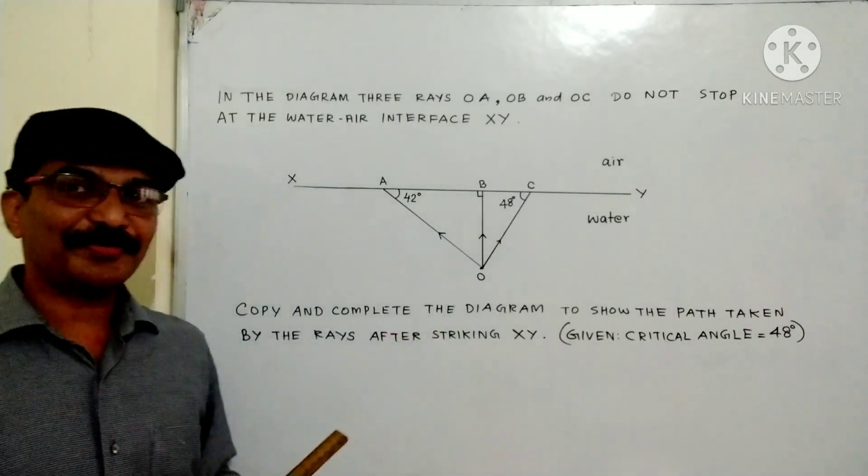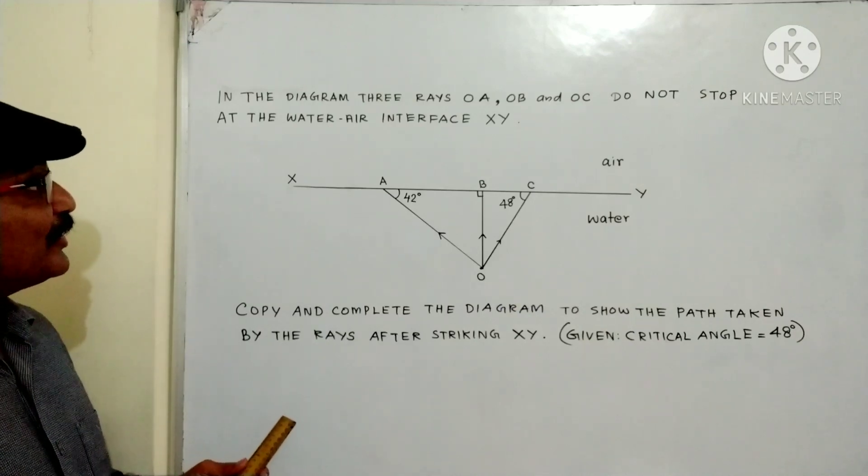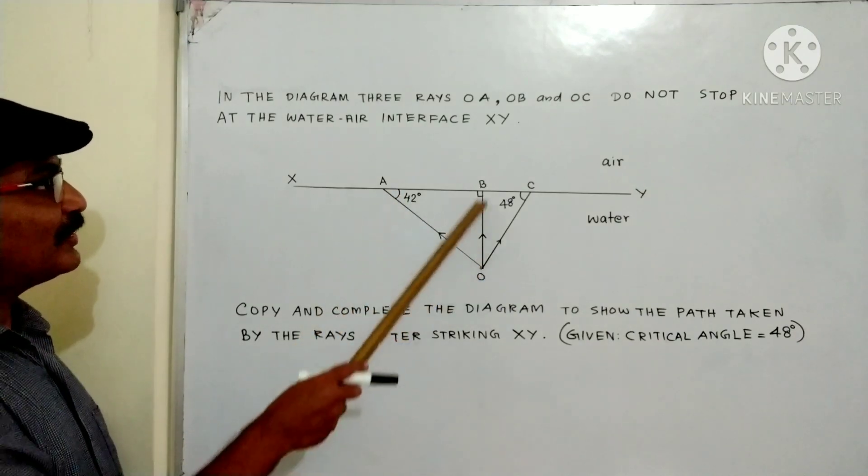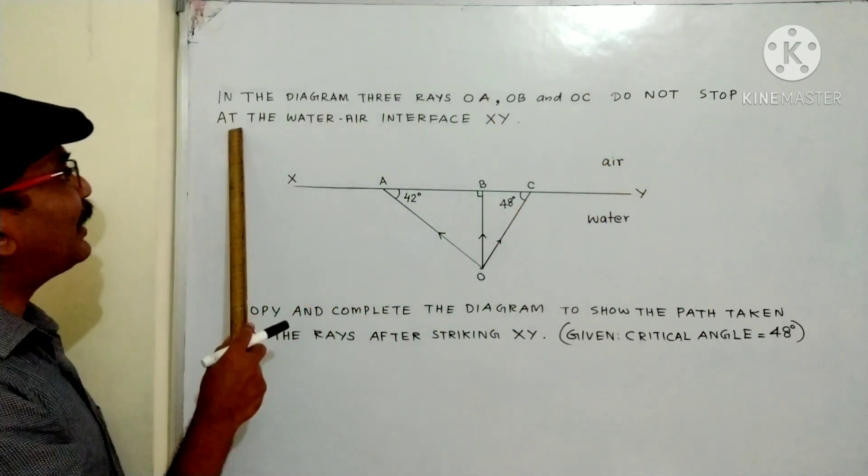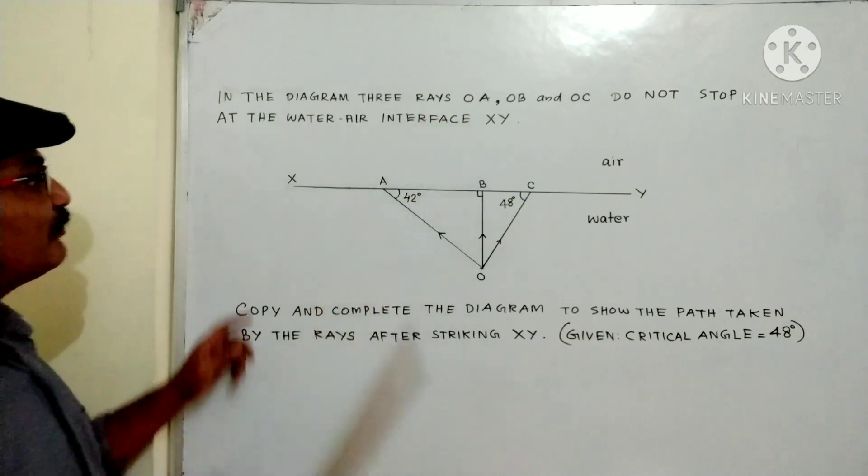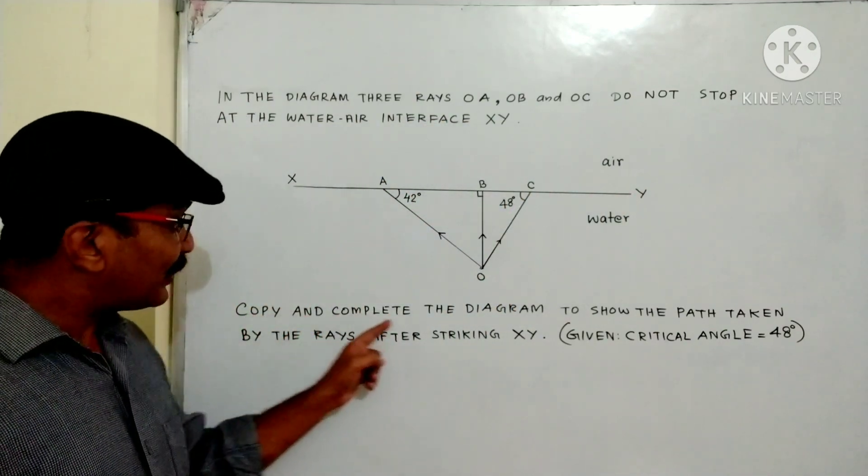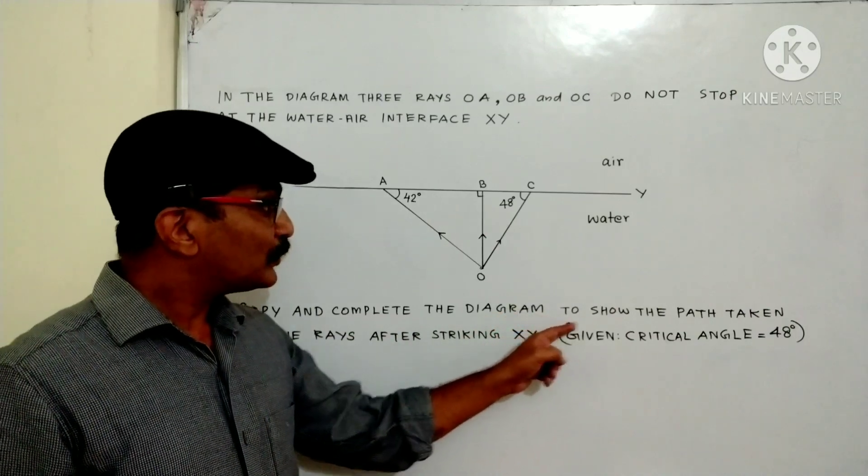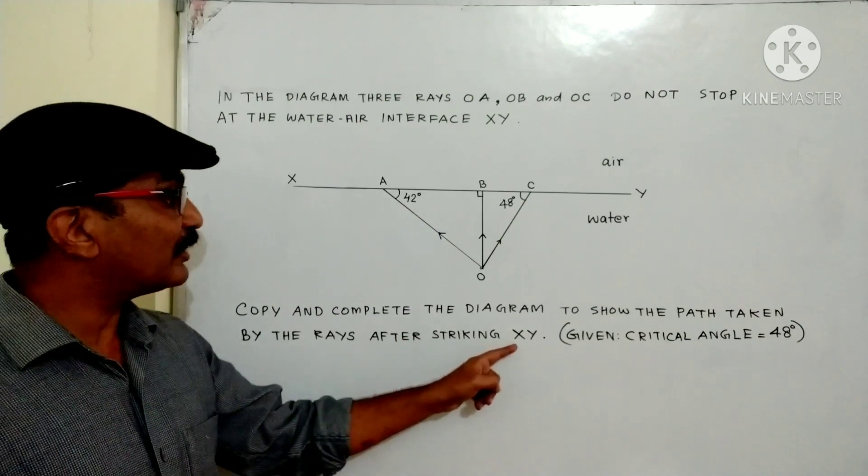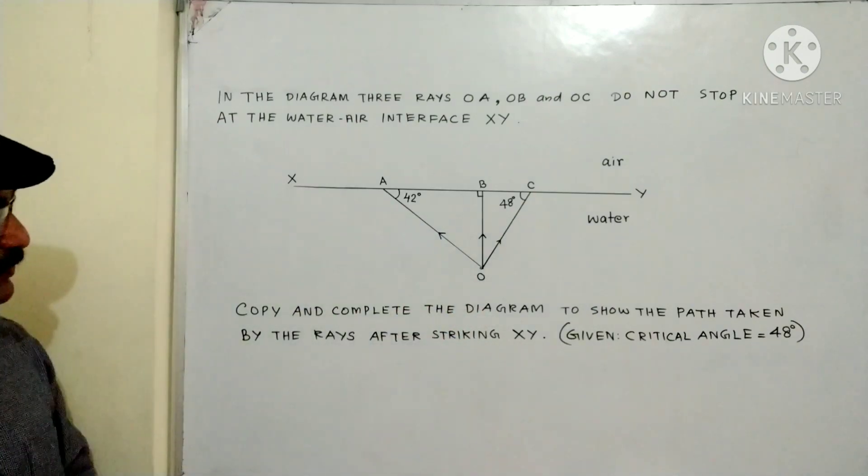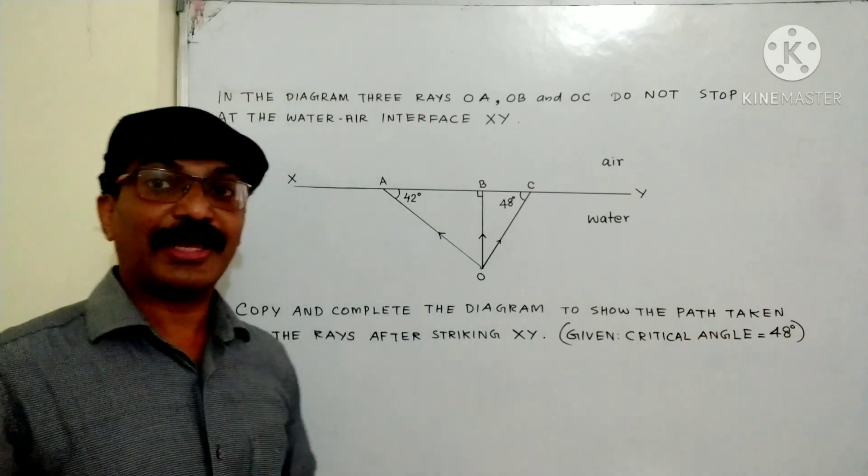Here is the question for you. In the diagram, three rays O-A, O-B, and O-C do not stop at the water-air interface X-Y. Copy and complete the diagram to show the path taken by the rays after striking X-Y, given critical angle equal to 48 degrees.